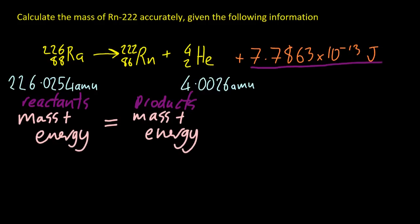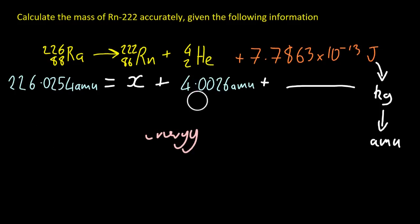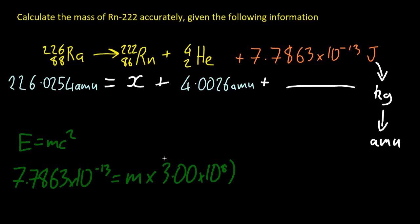So let's take my energy from the product side and work out how many atomic mass units it is. I'm going to convert to kilograms first and then to atomic mass units. So how do I turn energy into kilograms? Well, you just have to put it again through E equals mc squared. Except this time we're searching for M. Solving that for M gives me... So my mass is 8.651 times 10 to the minus 30 kilograms.